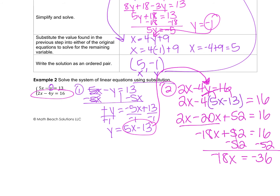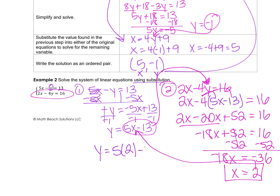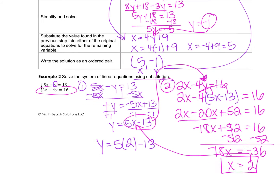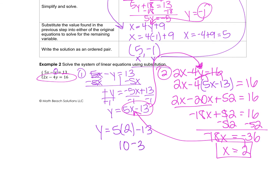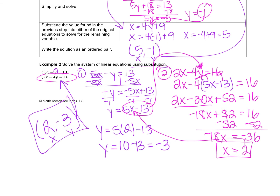Dividing both sides by negative 18 gives x equals 2. Once we have x, we plug it back into the equation from step 1. So y equals 5 times 2 minus 13, which is 10 minus 13, giving y equals negative 3. Write the solution as an ordered pair: x is 2, y is negative 3. To check, plug 2 for x and negative 3 for y into both original equations — both should be true.